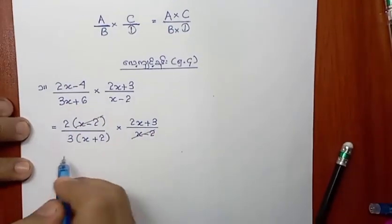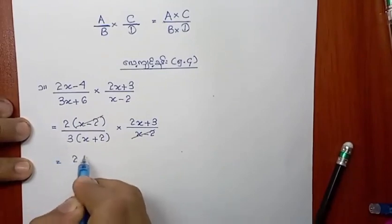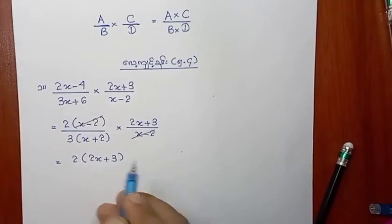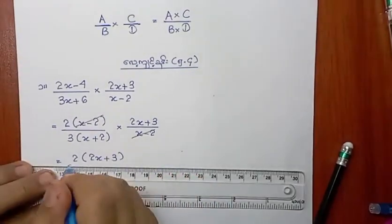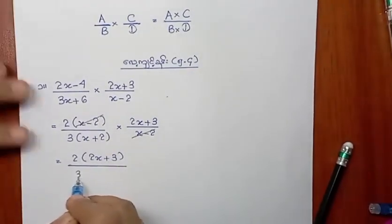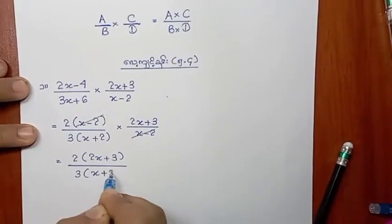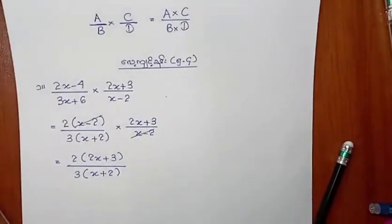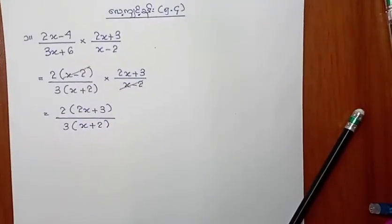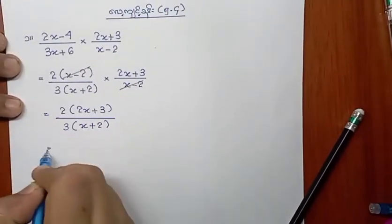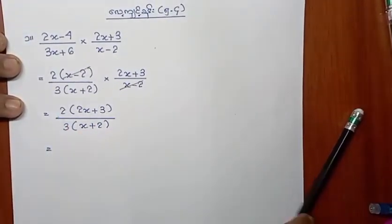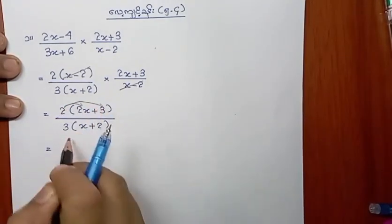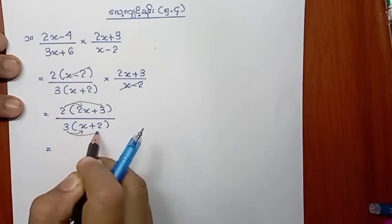2A plus 3, 1, 3, 2A plus 2. 8, 2A, plus 2, 3, 2A, 3, 2A, 3, 2A.